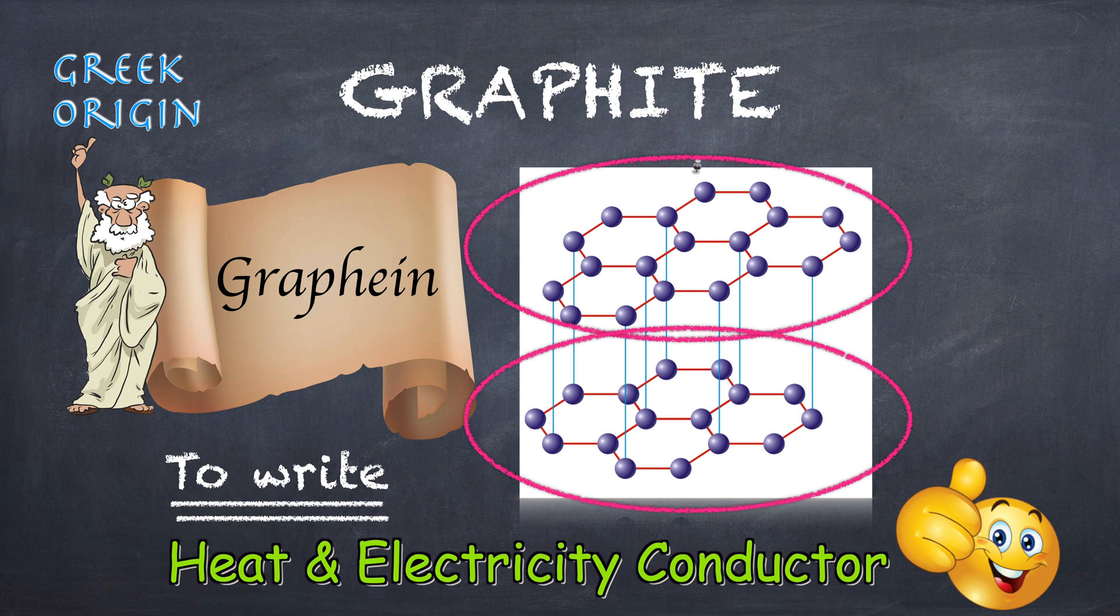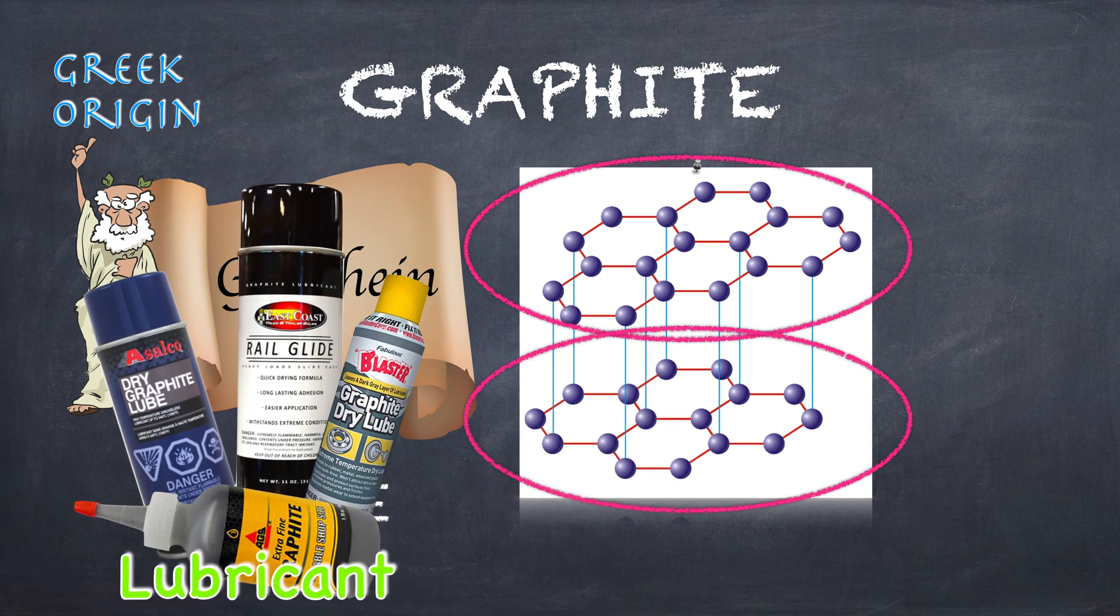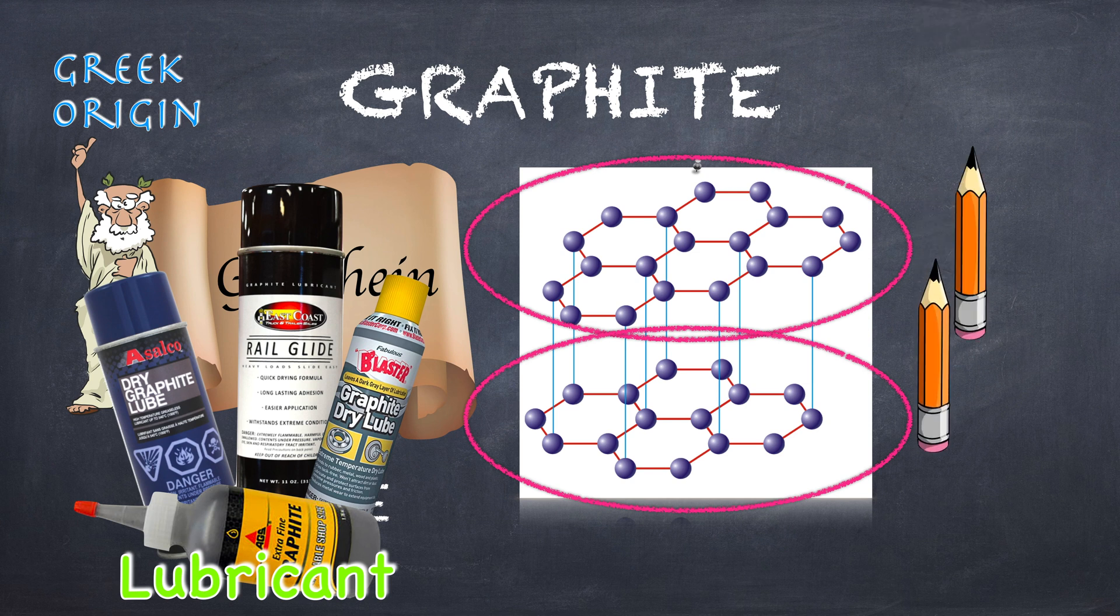Graphite is used as a common lubricant. A more familiar example of graphite for us is the pencil lead.